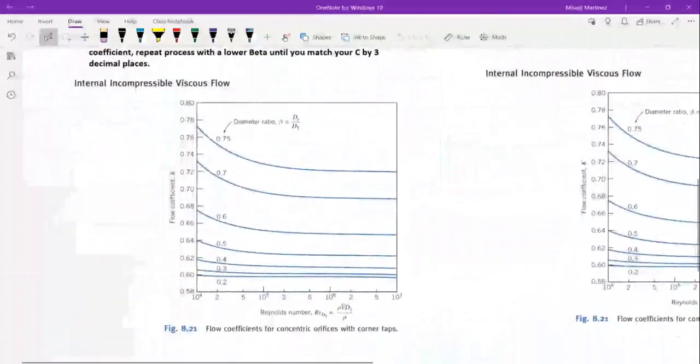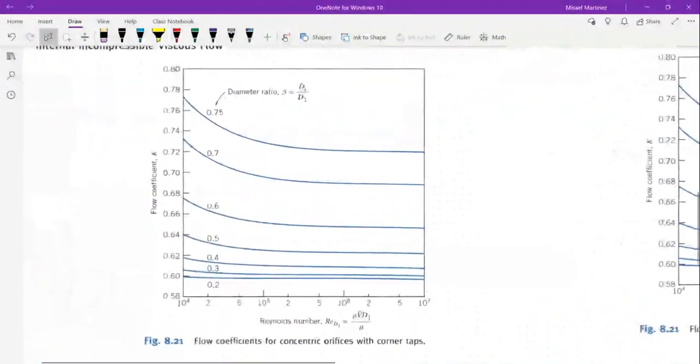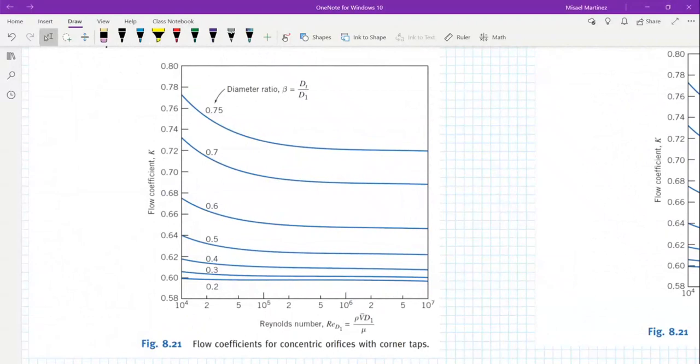Over here I have figure 8.21 as you can see. We have the Reynolds number on the x-axis. You can see it starts at 10,000 then it's at 20,000, 50,000, 100,000 and so on. On the y-axis we have our flow coefficient k, and these lines that you see here, these are our different betas.